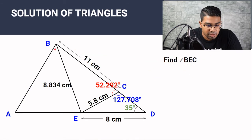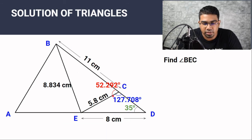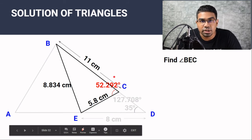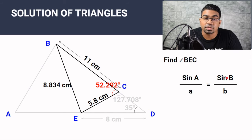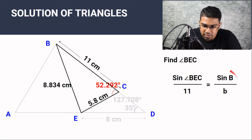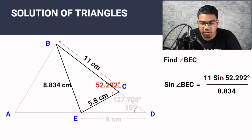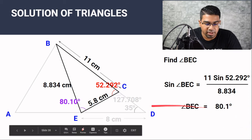The next question is to find angle BEC. Now we have the lengths of all three sides as well as one angle, so we can use either the sine rule or the cosine rule. I find the sine rule easier here. Sine A over a equals sine B over b. We want angle BEC, so sine of BEC over 11 equals sine of 52.292 degrees over 8.834. Making sine BEC the subject and taking arc sine, we get 80.1 degrees.